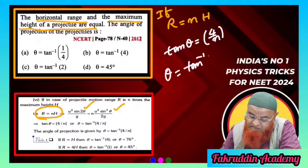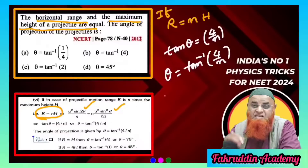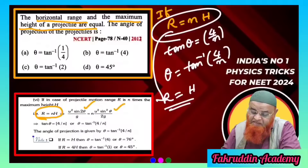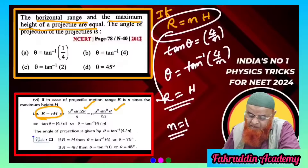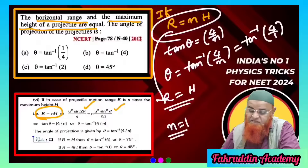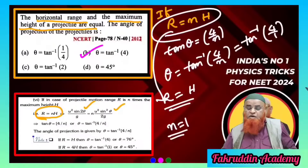In our problem, range and height are equal, so n = 1. Therefore, the answer is tan⁻¹(4/1) = tan⁻¹(4), which corresponds to option B.